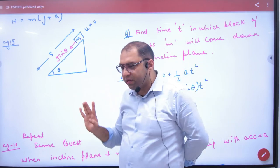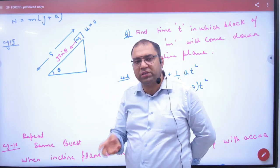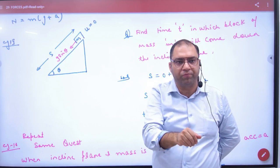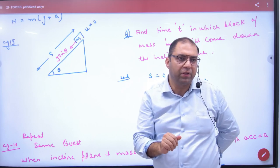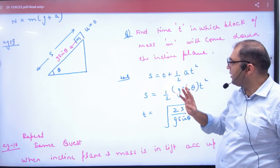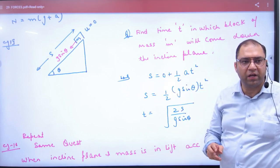So this distance S will be traveled. Initial velocity is 0. So how many times will it come down? Time. So if you have to tell this time value, what will we apply? S is equal to 0 plus half at square.